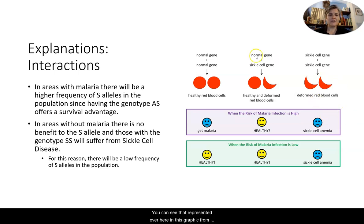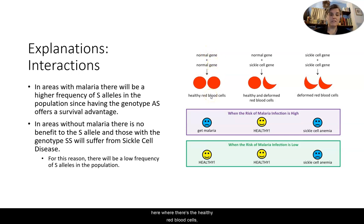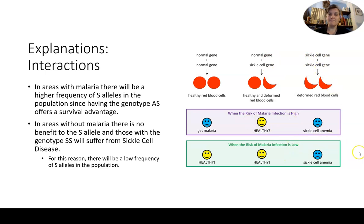You can see that represented in this graphic from Arizona State University. It shows AA with healthy red blood cells, AS, and SS, along with the risk of malarial infection when it's high and low.